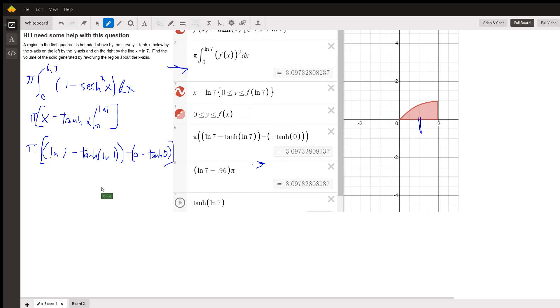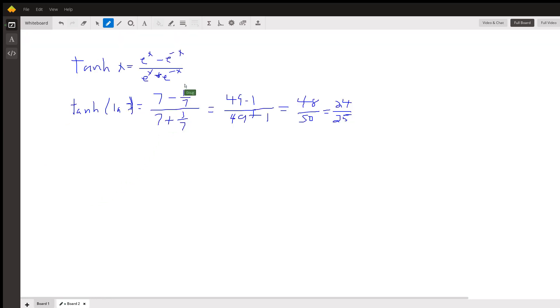If you have to evaluate the hyperbolic tangent of the natural log of 7 manually, the definition of the hyperbolic tangent of x is this expression right here. So if I put e to the natural log of 7, e to the natural log of anything is the anything. So I get 7 minus 1/7 over 7 plus 1/7,